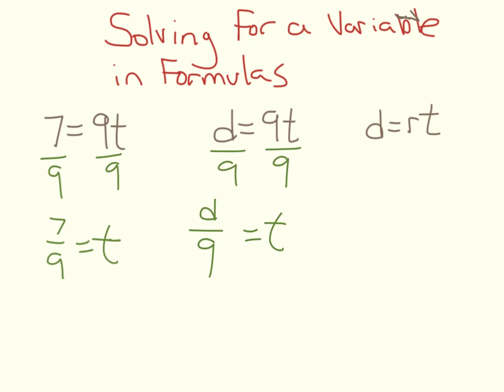Okay, we still want to get t by itself, so what are you going to do? Divide by r. Divide by r, okay. So then you just write it like this. So then t equals what? D over r. Okay?